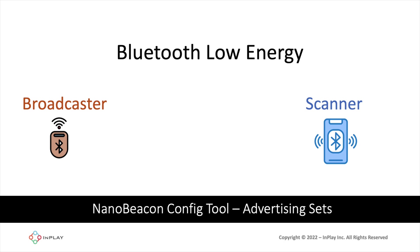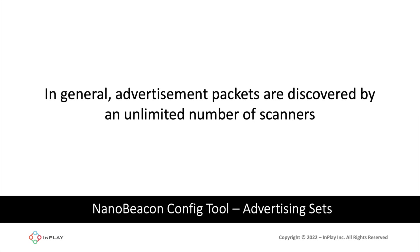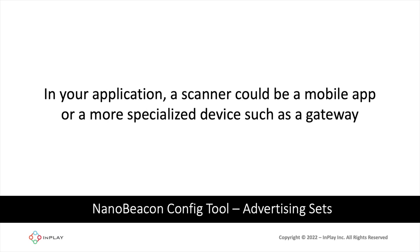In Bluetooth Low Energy, or BLE, some devices will act as broadcasters while others will act as scanners. Broadcasters send out what's called advertising packets to be discovered by scanners within the vicinity, and in general, the advertisement packets are discovered by an unlimited number of scanners. In your application, a scanner could be a mobile app or a more specialized device such as a gateway, depending on your specific application.